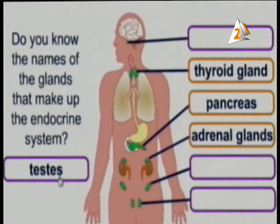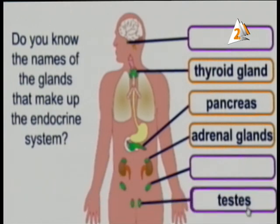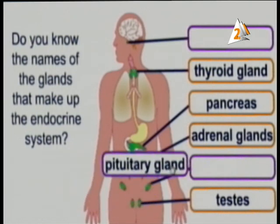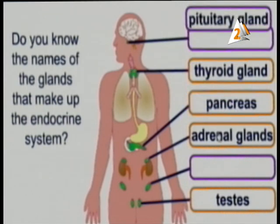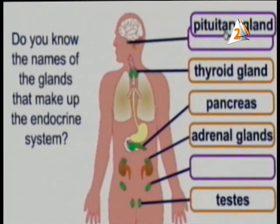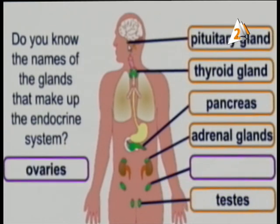The testes are found in the male reproductive system. The pituitary gland is found below the brain — it is a very small but very important gland that controls the function of all other glands, making it the master of glands.